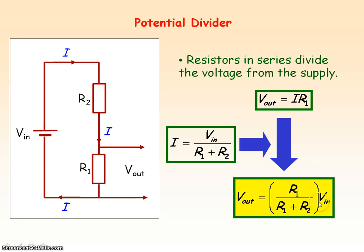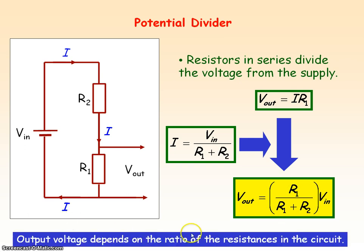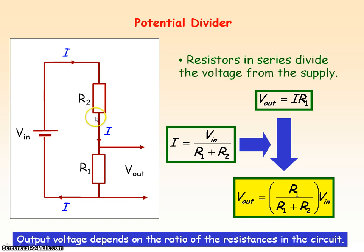If we bring all the resistance terms together we'll get this equation. So the output voltage depends upon the ratio of the resistances in the circuit, and it's important to note that as we are determining the voltage across resistor R1, R1 is on the top of the equation. If the voltage output was across R2, then R2 would be on top instead, but would still be divided by the total resistance of R1 plus R2.